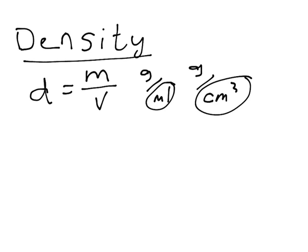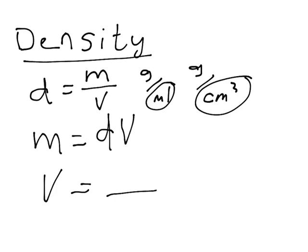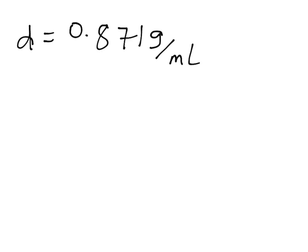So for problem solving, if you want to get the mass of something, you simply solve for it. So m would be equal to density times volume, or the volume of something would be equal to mass over density. Let's do a little short problem on density. Let's say you have an unknown liquid with a density of 0.871 grams per milliliters and a mass of 13.5 grams. What will be the volume of the unknown liquid you have?